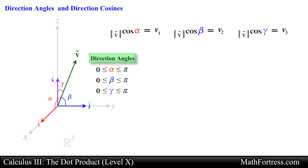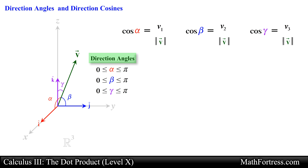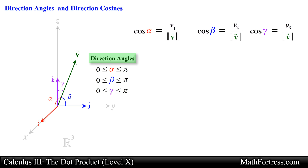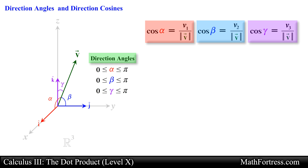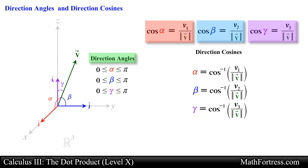Finally we solve for cosine of alpha, beta, and gamma in the first, second, and third expression respectively. These expressions are referred to as the direction cosines of vector v. You can easily find the value of the direction angles by using inverse cosine.